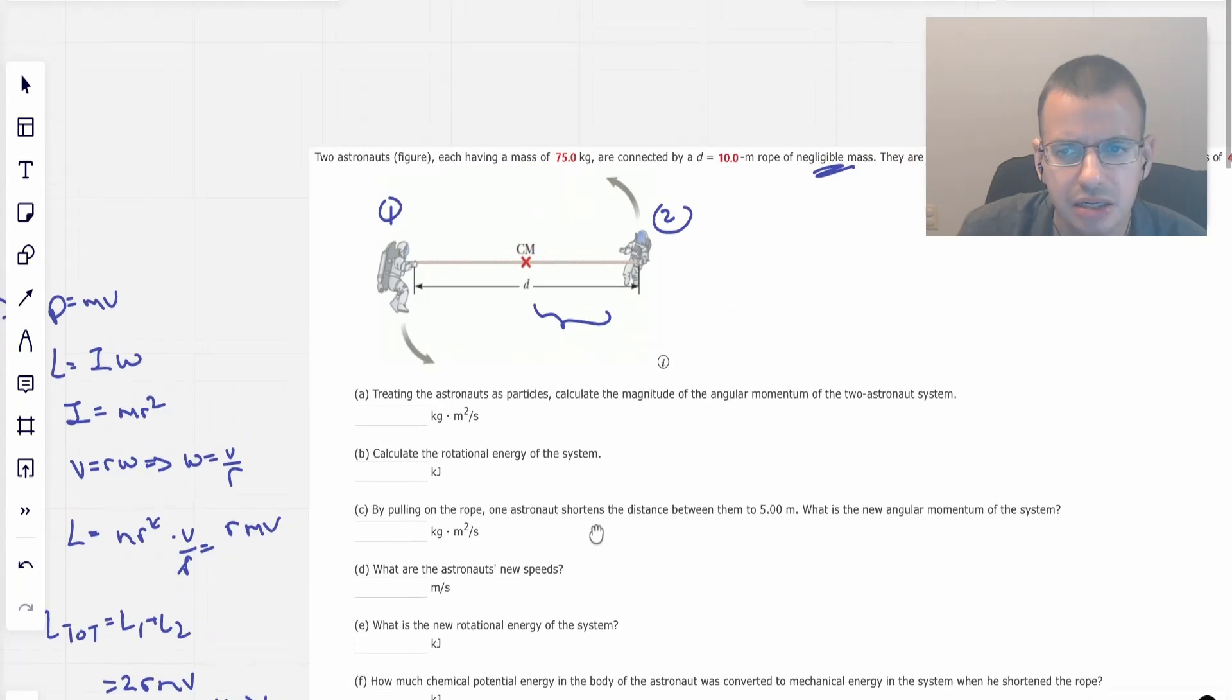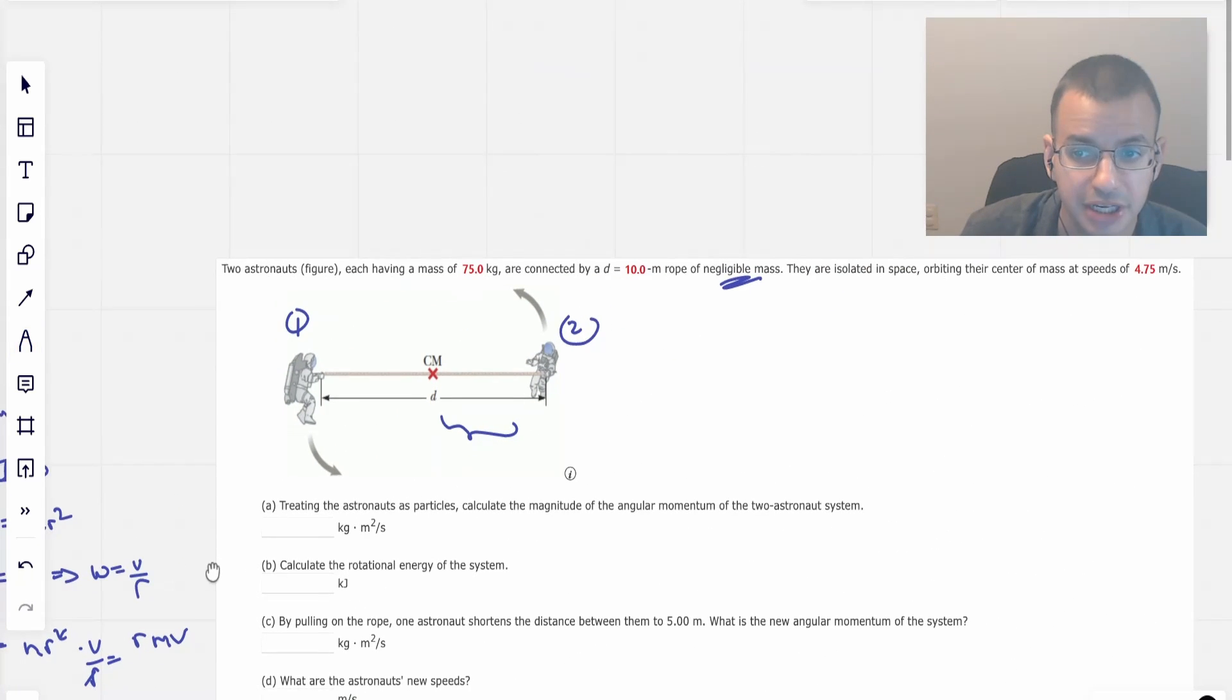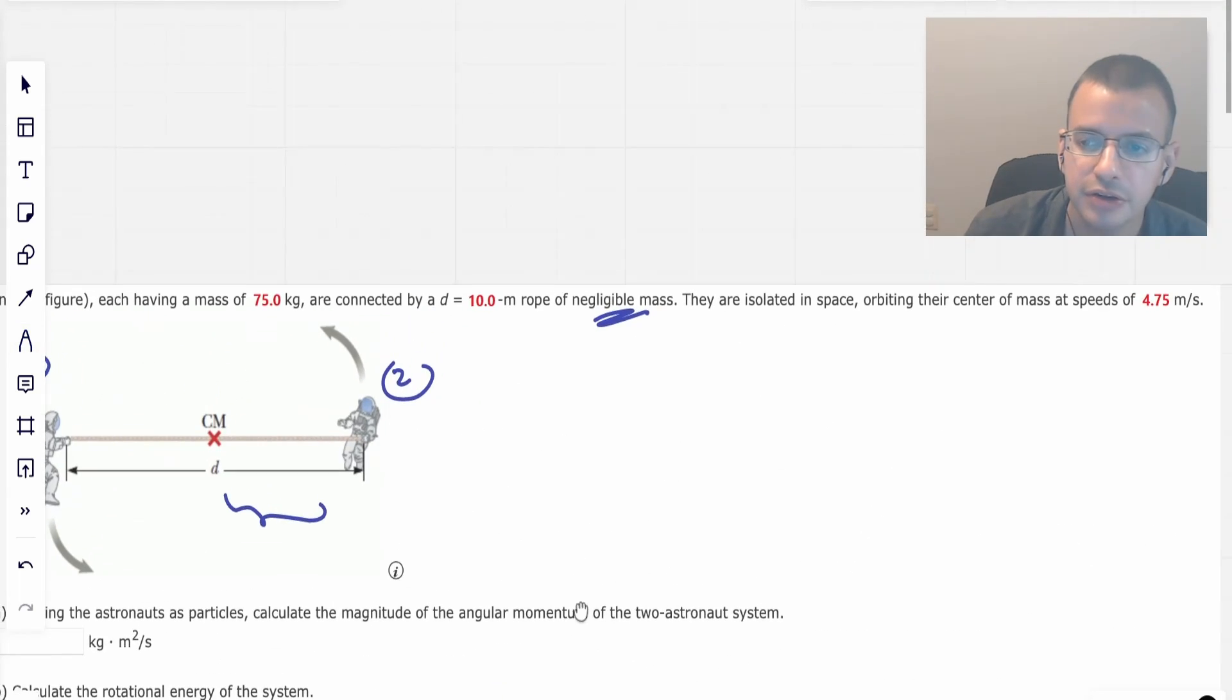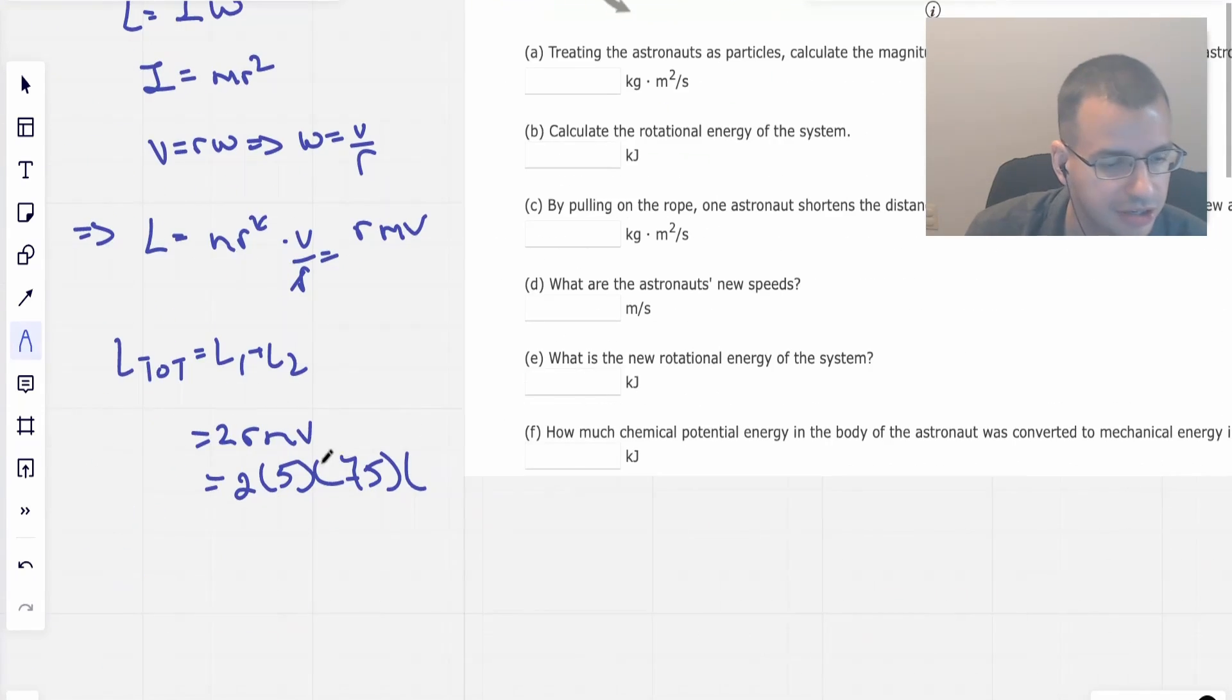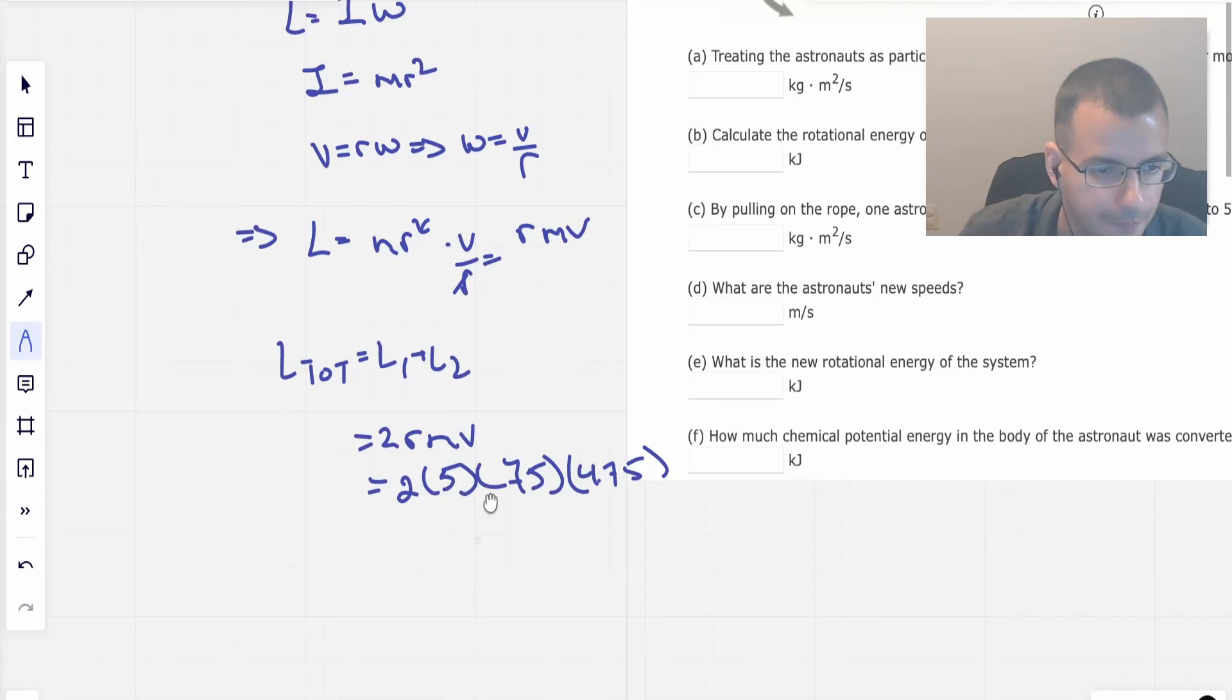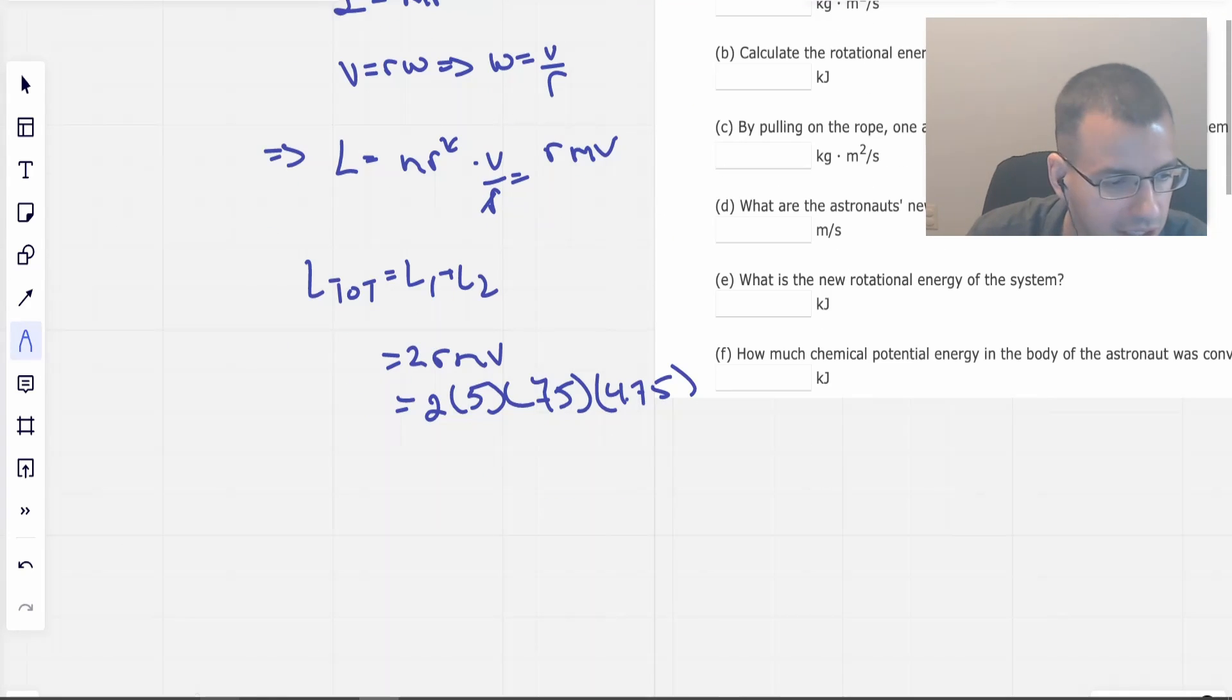And it's going to be a speed, not velocity, because the direction is changing. Velocity would imply a constant angle. Now we go to a calculator. I prefer Wolfram, 2 times 5 times 75 times 4.75.